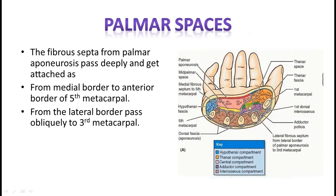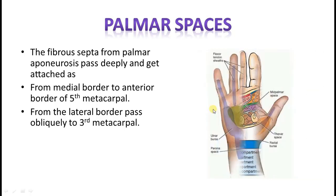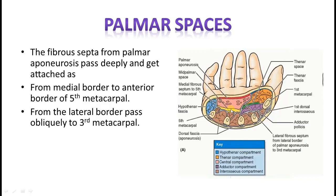Then you have one more space which is the thenar space. These two are very important. Of course, there is also a very small, not much potential space — the hypothenar space. Here we are able to see the palmar aponeurosis sending fibrous septa laterally and medially, attaching to the third metacarpal and the fifth metacarpal, dividing the palm into three compartments: mid-palmar or central palmar, thenar, and hypothenar space.